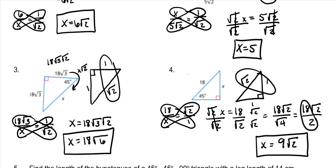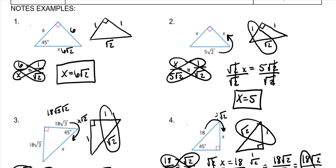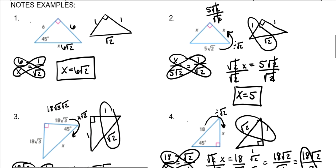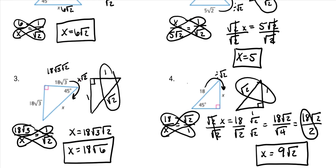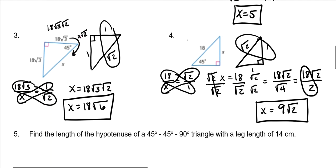For pattern people: to get from the hypotenuse to the leg, you're dividing by the square root of 2. So 5 square roots of 2 divided by the square root of 2 cancels and you get 5. Whenever you're dealing with a number that doesn't have a square root of 2 with it, you are literally dividing by the square root of 2. So you would do 18 divided by the square root of 2 and follow the rationalization process. Or set up your formula triangle and go from there.